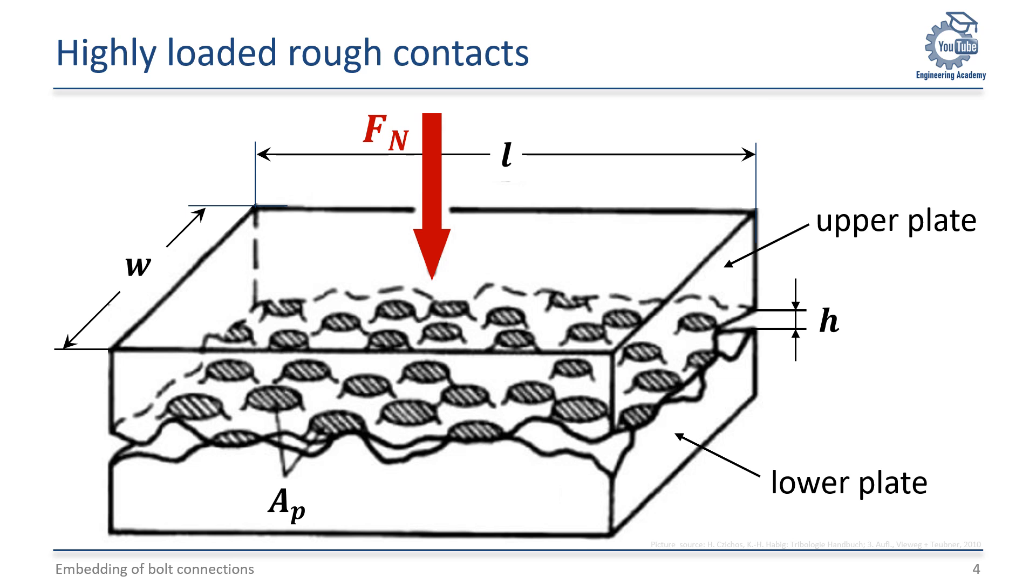In this small contact area, the normal force FN generates high local pressure that is so high that the yield strength of the material is exceeded at these points, causing the roughness peaks to be plastically deformed and flattened.